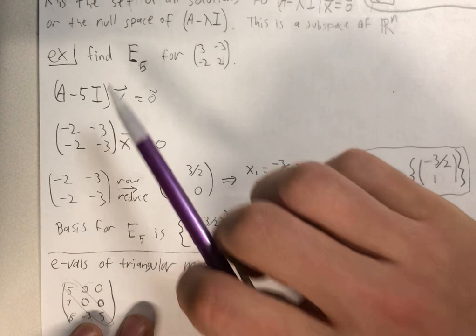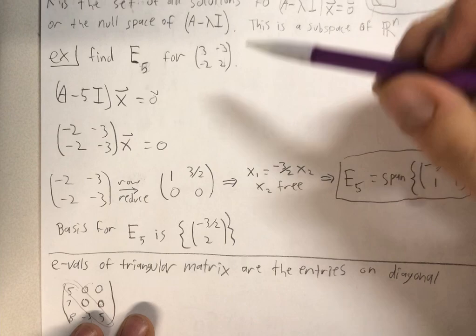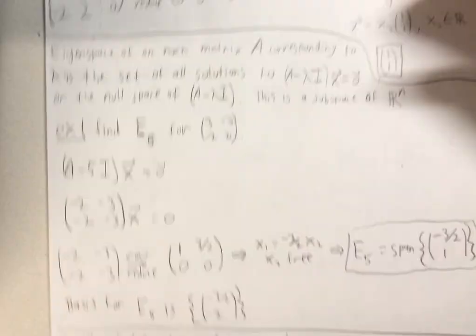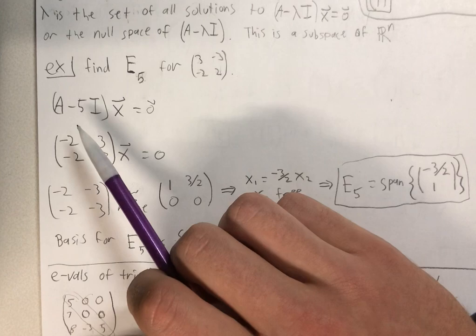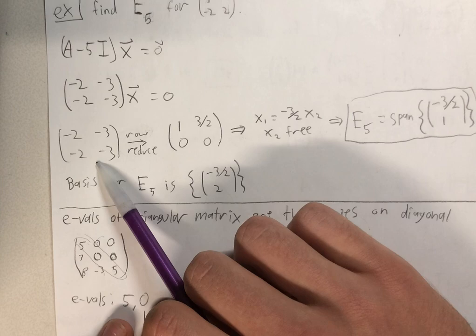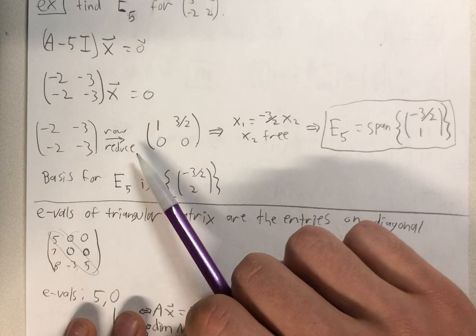So let's find the eigenspace of 5 for 3, negative 3, negative 2, 2, which is the same matrix as before. So we just do A minus 5I, which is this, and we row reduce it to get this. And we see that X1 is negative 3 halves X2, where X2 is our free variable.